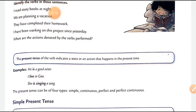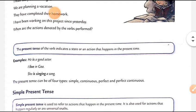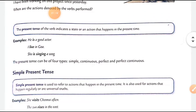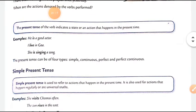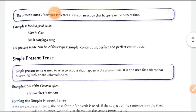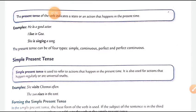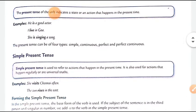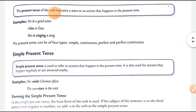Ab aap tenses ke types padhenge. The actions that happen in the present times indicate the present tense. For example: 'He is a good actor' — wo abhi hai. 'He lives in Goa' — wo abhi rehta hai. 'She is singing a song' — gaana abhi ga rahi hai. The present tense can be of four types: simple, continuous, perfect, and perfect continuous.